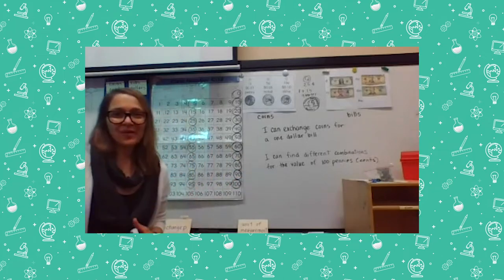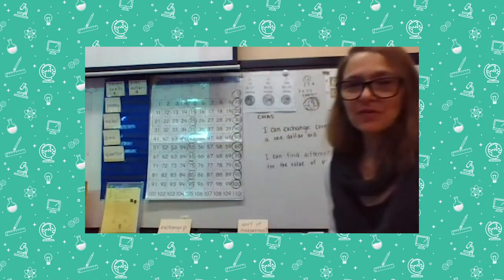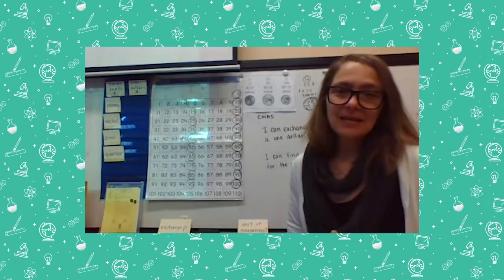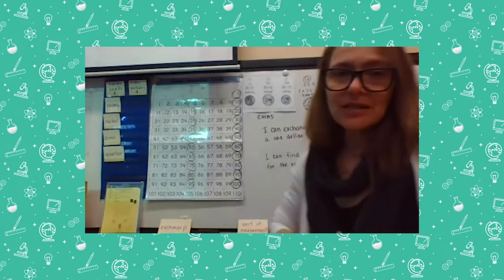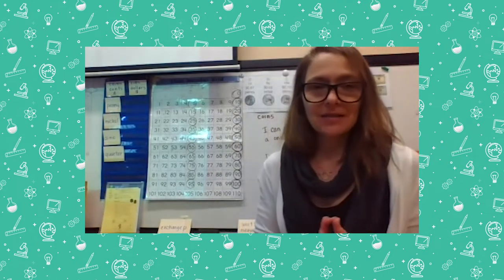Now we're going to do a little bit of review with money — the amounts and values of some coins. One of the things you need to remember is that the size of a coin doesn't necessarily have anything to do with its value. The smallest coin isn't necessarily going to be worth the least, and the largest coin isn't necessarily going to be worth the most. So we have to look at the coins and remember them — and we can read, because it always says the value on there.